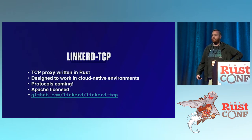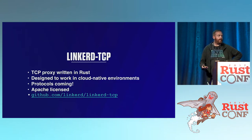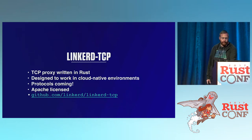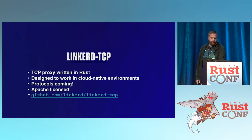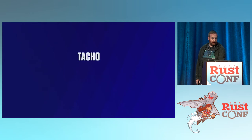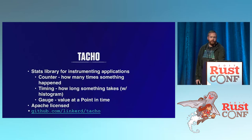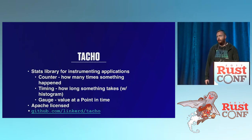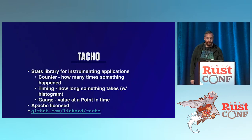We have more protocols coming. Right now it's TCP, but we're adding HTTP/2. Just today we announced that Carl open-sourced the H2 repo on GitHub — you can take a look at that. Linkerd TCP, just like Linkerd, is Apache licensed and free for everyone. One of the things we've built to enable Linkerd TCP is something called TACO, which is a stats library that allows you to instrument your applications.